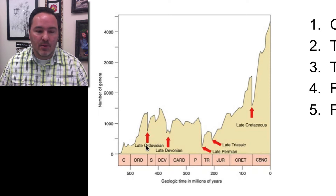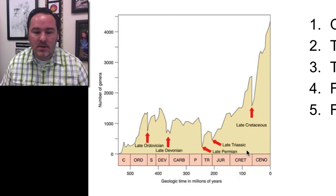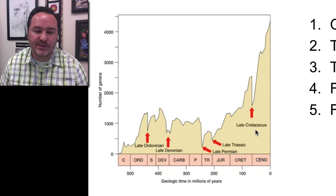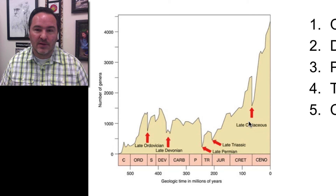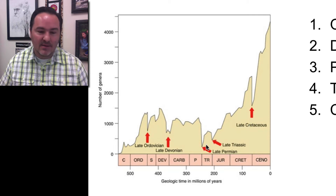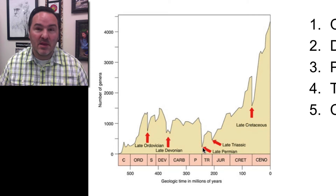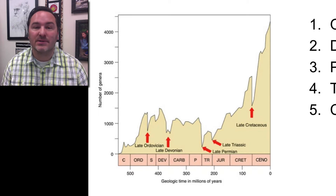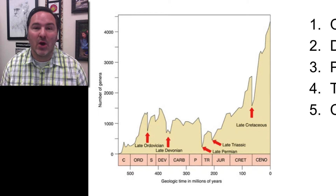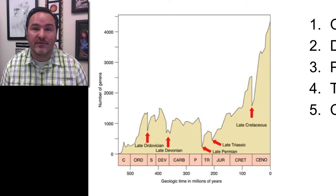The Ordovician, the Devonian, the Permian, the Triassic, and the Cretaceous. The largest of these would be the Permian. In fact, in the Permian extinction we lost about 84 to 85 percent of the known biodiversity — the estimated biodiversity from that period of time.